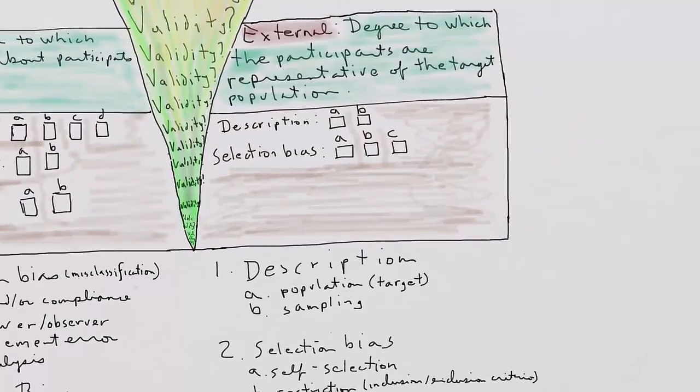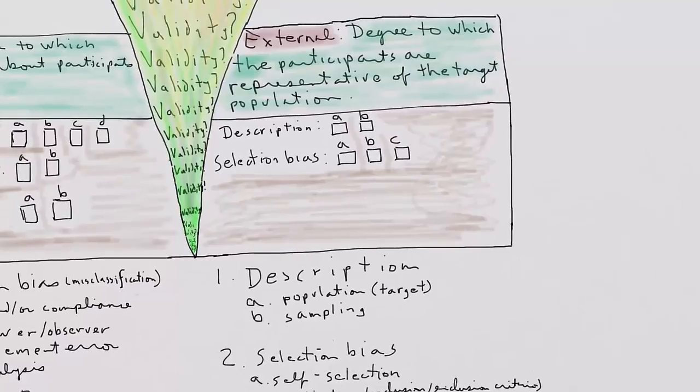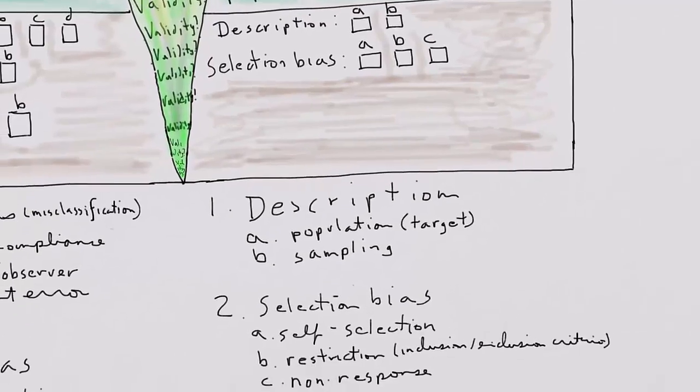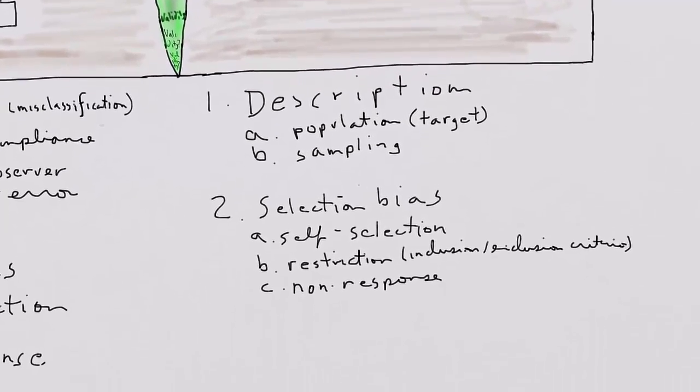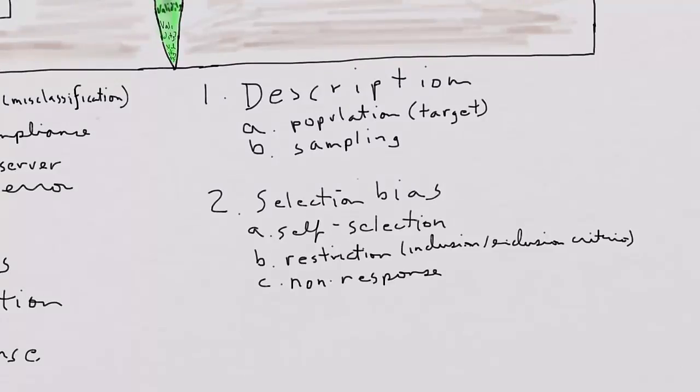External validity: the degree to which participants are representative of the target population. And I've broken it up into two themes: description and selection bias. So description basically has to do with the extent to which the researchers have done a good job describing the population, target population, or in a broader sense the population to whom the research findings are supposed to be generalized. And then the description of the sampling, and you can also assess the sampling at this point.